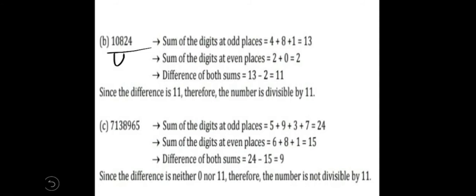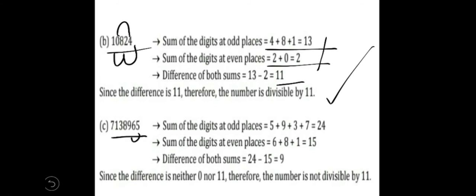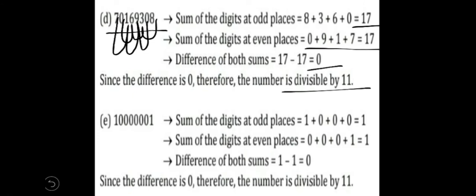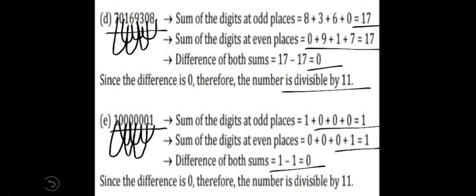For the next number: 1 plus 8 plus 4 is 13; 2 plus 0 is 2. The difference is 11, so the number is divisible by 11. For the following number: odd places sum is 5 plus 9 plus 3 plus 7 = 24; even places sum is 1 plus 6 plus 8 plus 1 = 16 (wait: difference is 9 — not a multiple of 11), so this number is not divisible by 11. For the next number: odd places give 8 plus 6 plus 0 = 14 — wait, the difference is 0 — so this number is divisible by 11. For 10000001: sum of odd places is 1; sum of even places is 1; difference is 0, so divisible by 11.